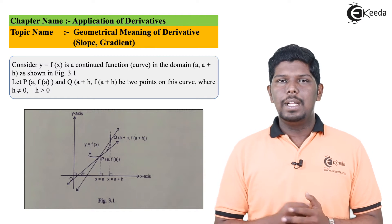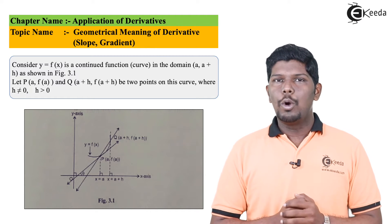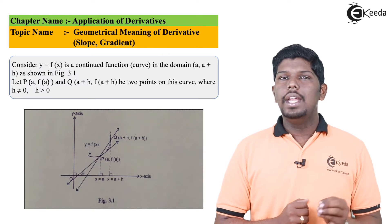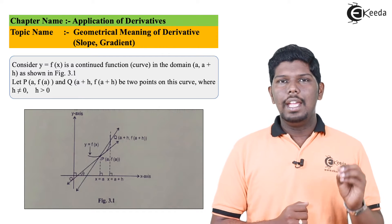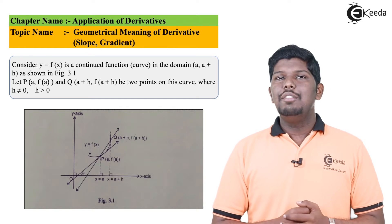Similarly, for point Q, the value of x will be a plus h, and the value of y will be f of a plus h. So we have considered two points P and Q whose coordinates are (a, f(a)) and (a+h, f(a+h)).